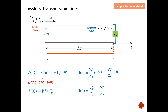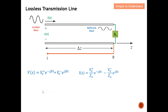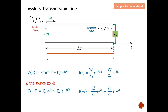For example, if I want to find the voltage and current at the load side, z equals zero. So e to the zero equals one, giving us V₀⁺ plus V₀⁻ for voltage, and the corresponding current expression at that point. Next, moving to the position where z equals minus l, I replace z with minus l — the minus-minus becomes positive — so I obtain the voltage equation at that point.